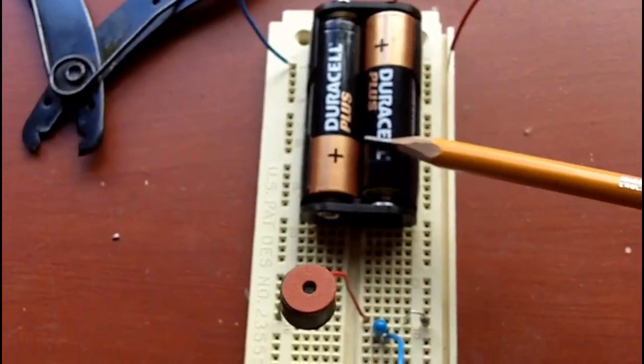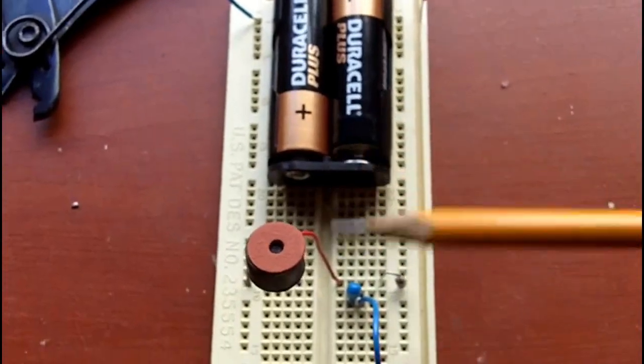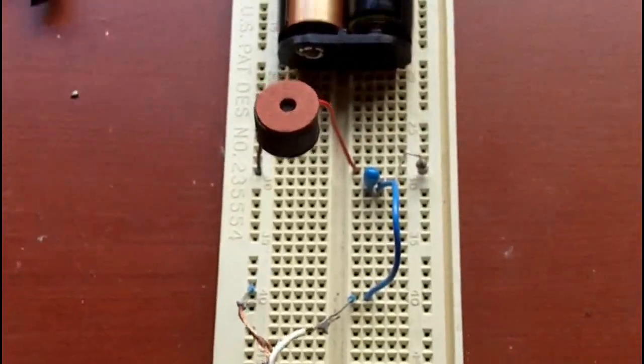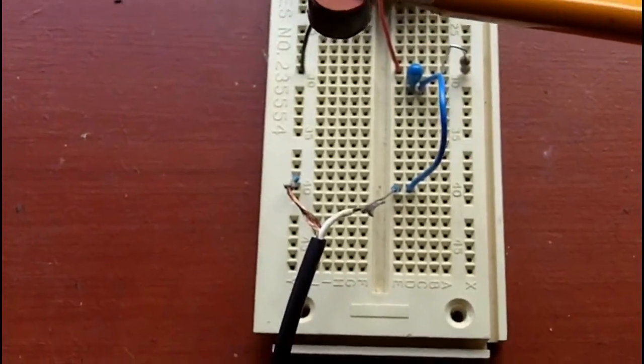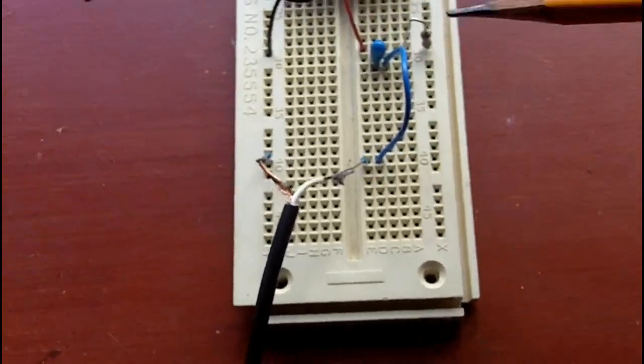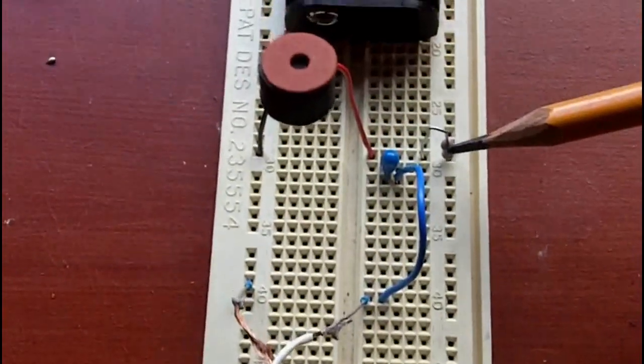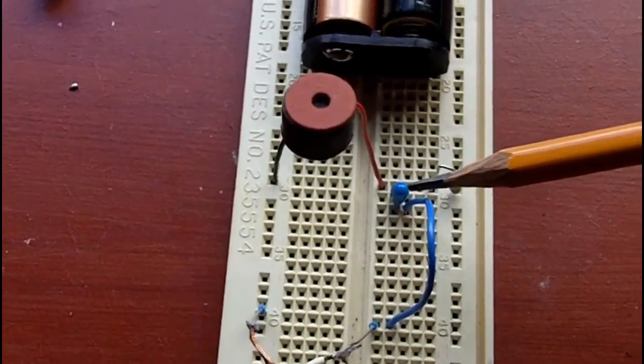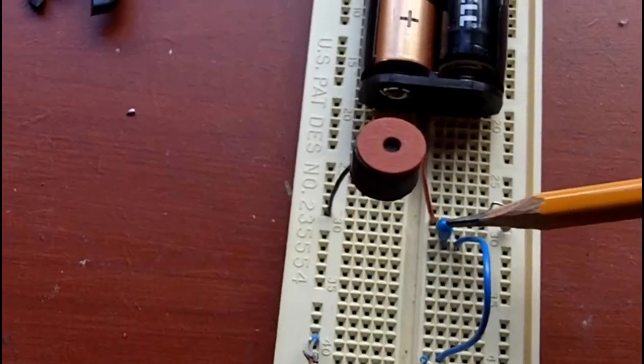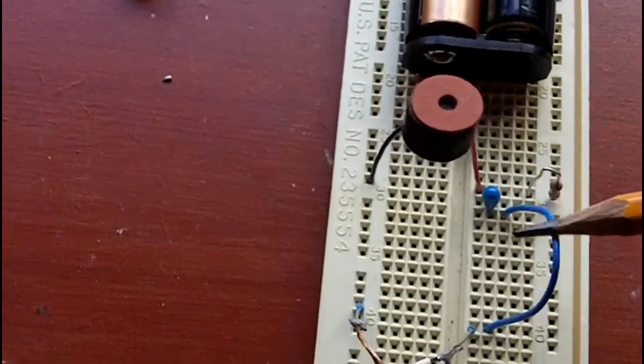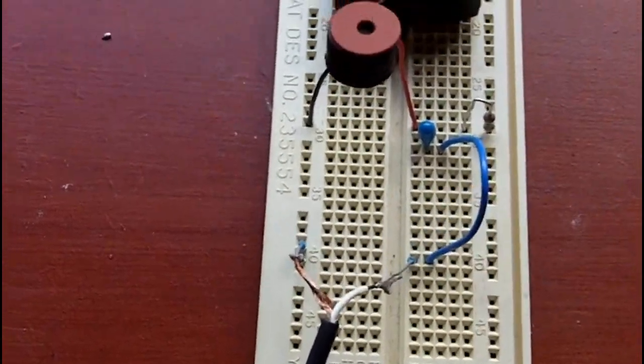I'm using Duracell batteries, but you can probably use little button cells if you want to make this much smaller, which you probably will want to. This is the electric condenser microphone, this is the 1k resistor, this is the 1 microfarad electrolytic capacitor, then that goes out to the wires which then go to a small amplifier which I've got set up here.